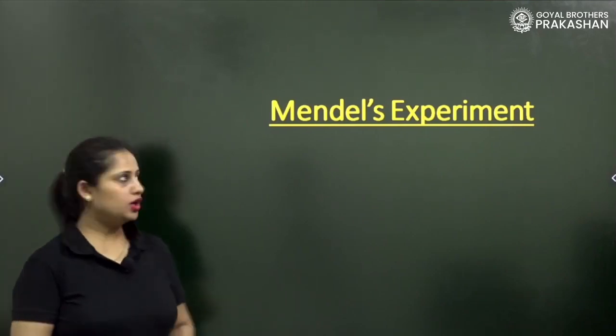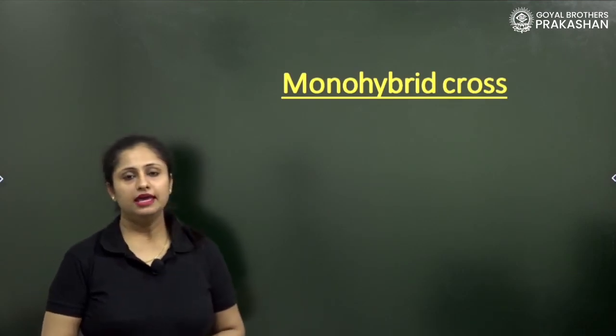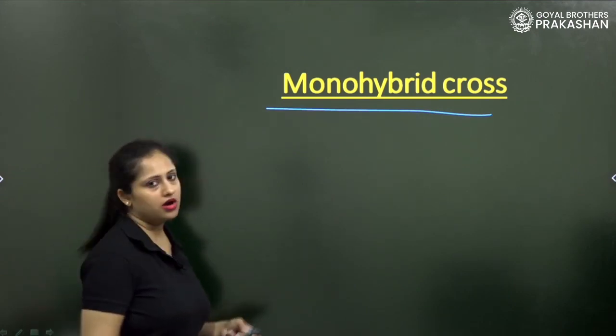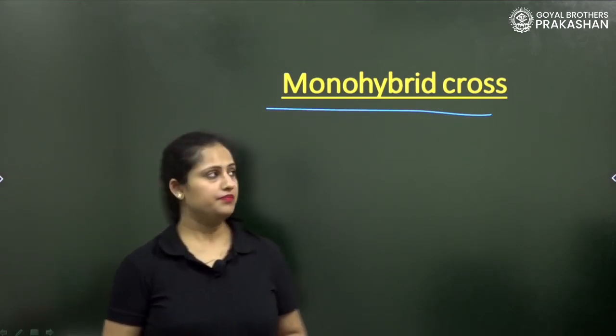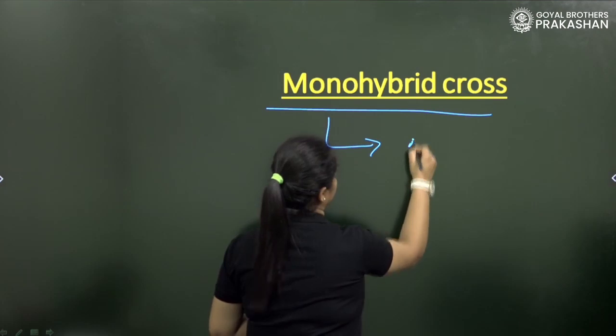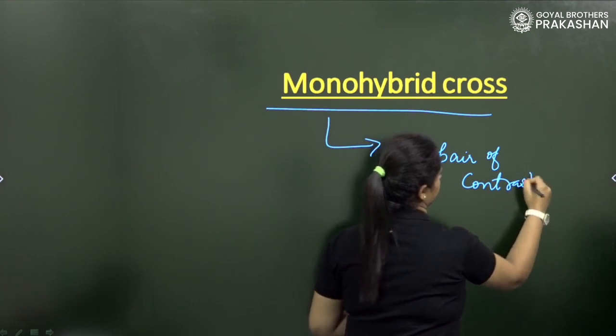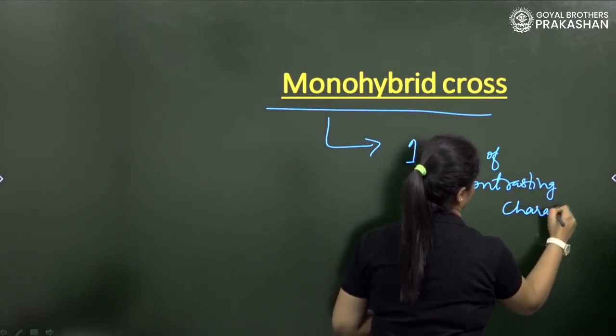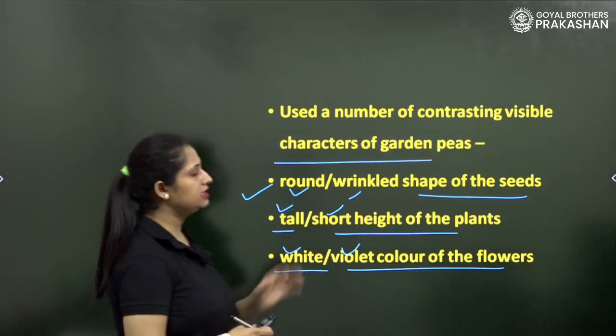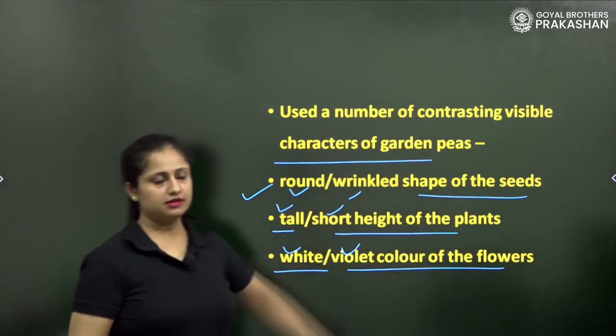Let's have a look at Mendel's experiment. He did the monohybrid cross first to observe the patterns of the inherited characters or traits. Monohybrid cross involves only one pair of contrasting characters. It means we are just considering any one, for example if I talk about the shape of the seed, so I'm talking about only the shape of the seed.